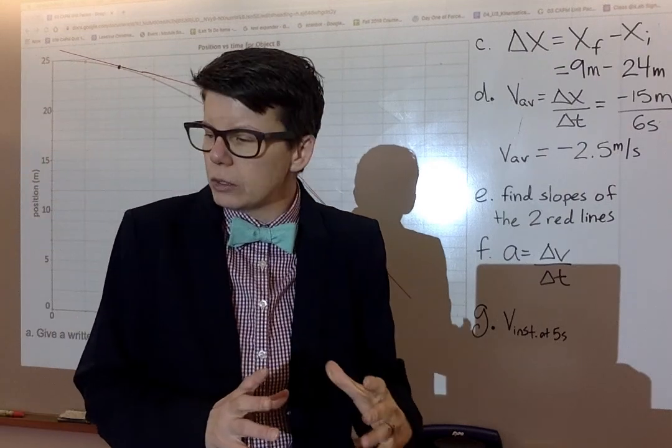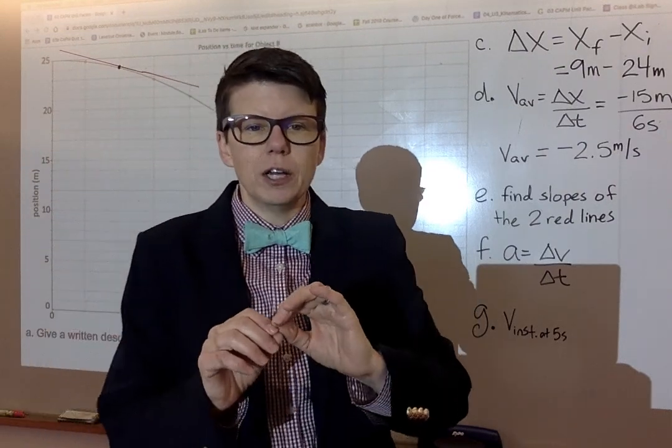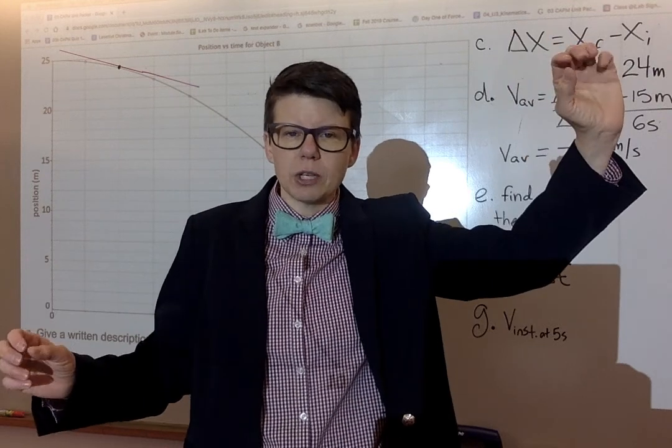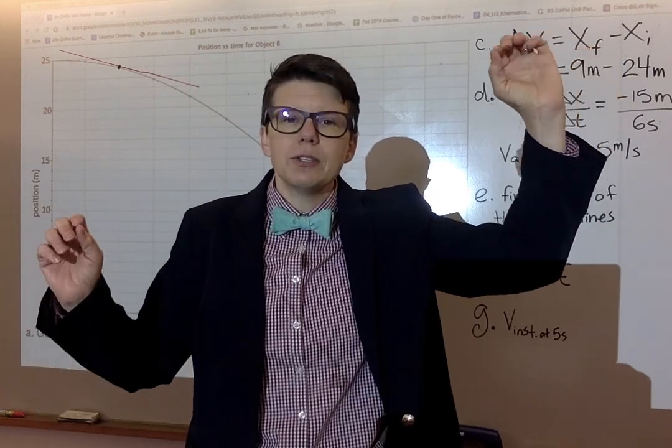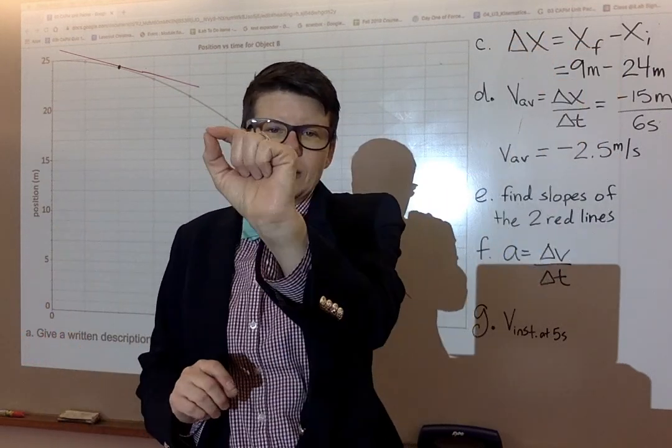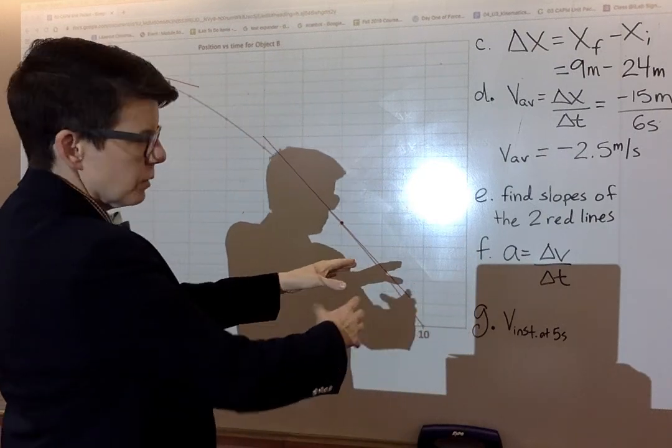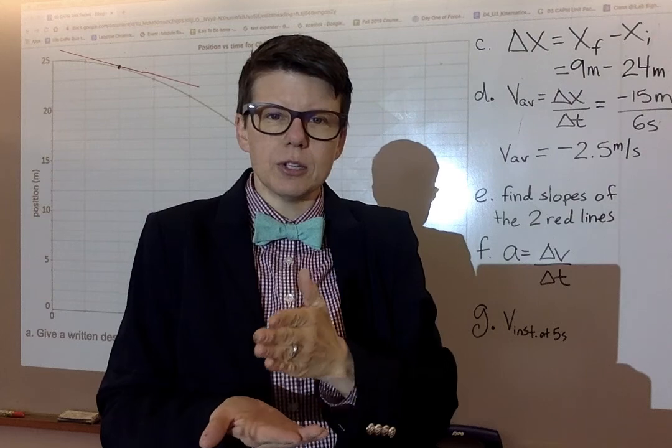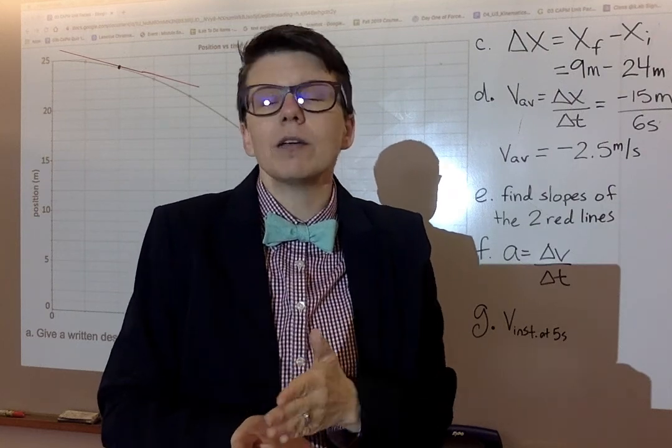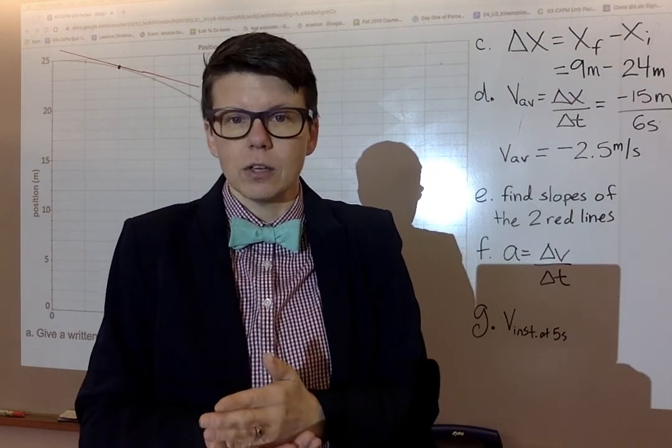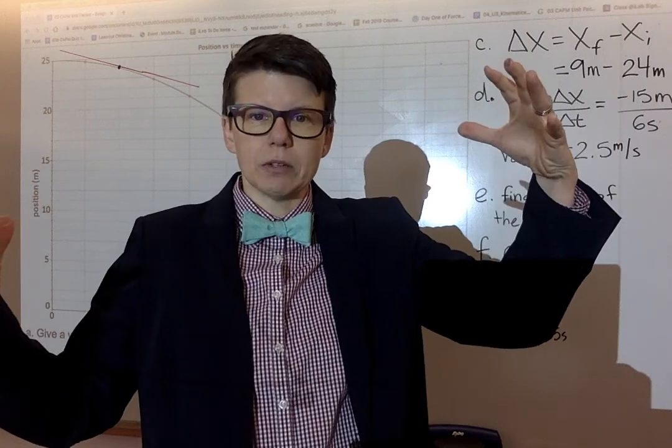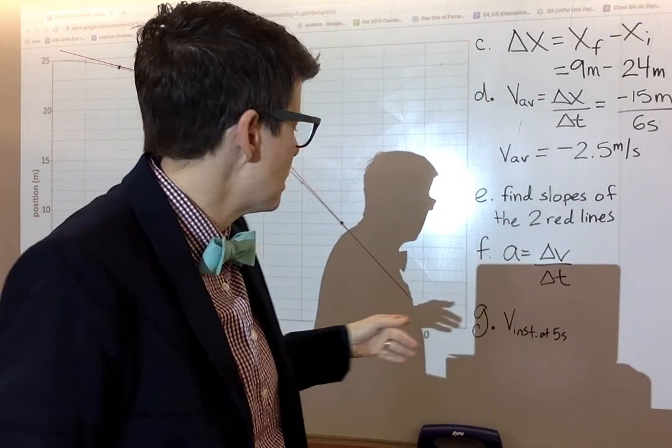So this is where I'm going to call on you to use some knowledge about instantaneous velocity. A while back, we learned that if you find an average velocity over some time interval, that is the same as the instantaneous velocity at the center of that interval. I'm going to use that fact here. In order to know the velocity at five seconds, I can find the average velocity for a time interval that surrounds that and puts five at its center.